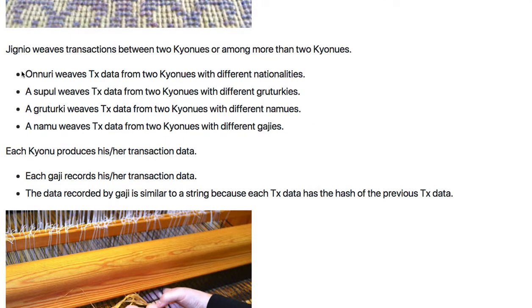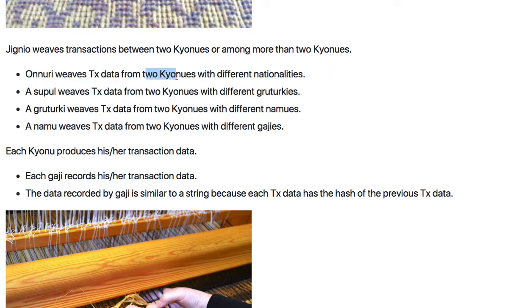Jingyo weaves transaction data between two gyonus or more. Onnuri weaves transaction data from two gyonus with different nationalities.